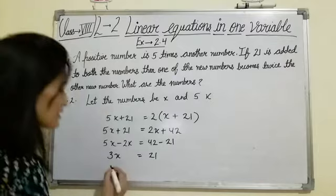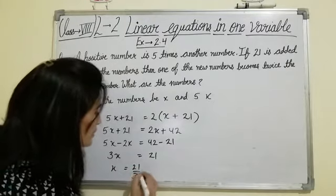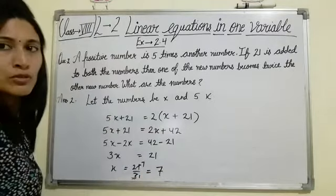5x minus 2x is 3x equals to 42 minus 21 is 21. Transposing 3 to RHS, x equals to 21 upon 3. 3 divides into 21 seven times, so x equals to 7.